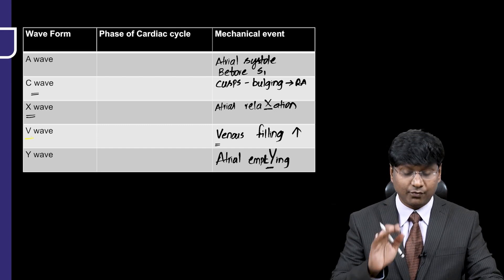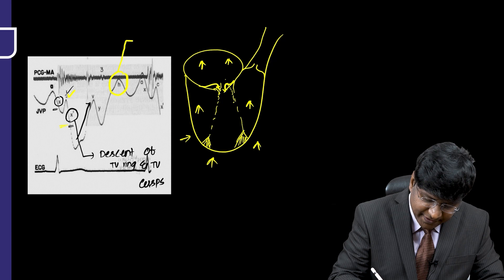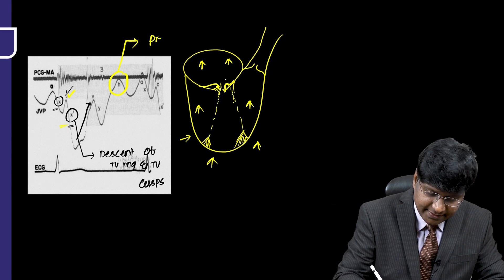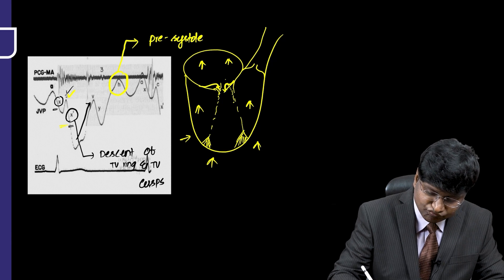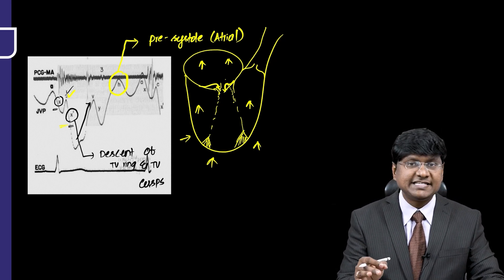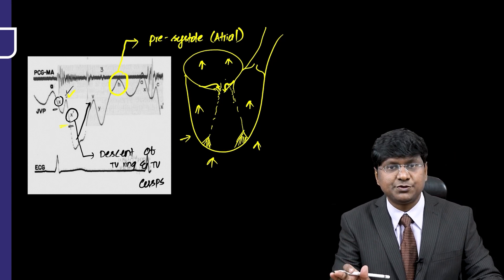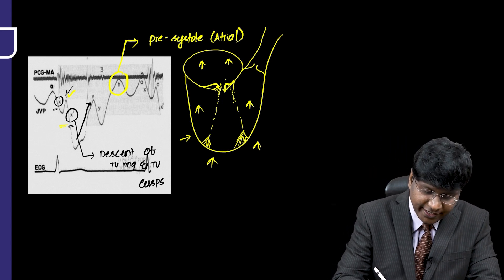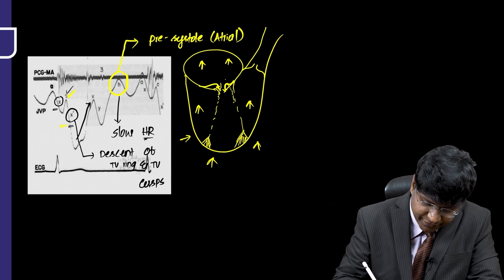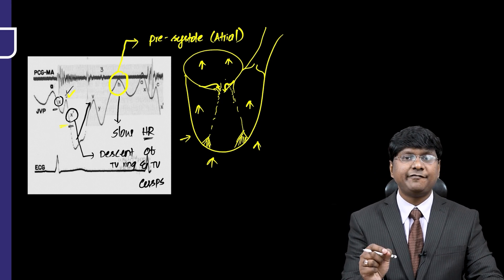The Y wave is a negative wave. One more important wave is the H wave, which is usually not seen. The H wave is present before the A wave, making it a pre-systolic wave of the atria. Atrial contraction causes the A wave; just before that you get the H wave. The H wave is usually seen during slow heart rate — bradycardia — and it occurs due to passive right heart filling during diastole.